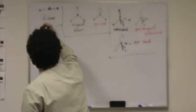This one I drew a little earlier. It has five groups on the center atom. This shape is called trigonal bipyramidal.